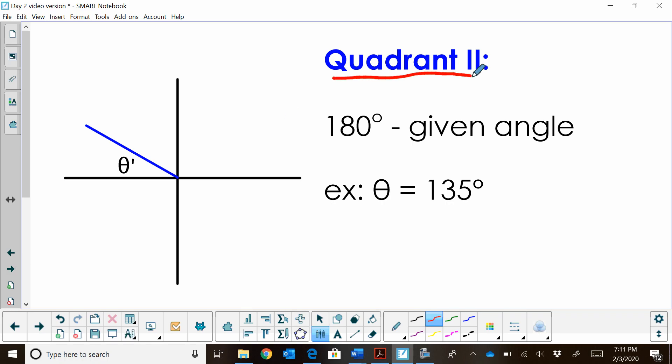Now quadrant 2. To find the reference angle in quadrant 2, let's think about this rotation. So you've rotated into quadrant 2. This blue line is your terminal side. You're going to find this angle. We're calling it theta prime. Theta prime is just found by taking 180 degrees and we're going to subtract the given angle of 135. So the reference angle for 135 is actually just 45 degrees. How far is it from the x-axis? 45 degrees.